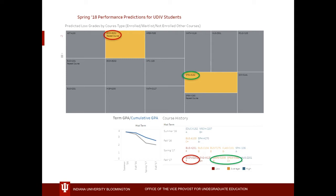If I had this information as an advisor, I would most likely be sending resources. For that economics class, I might say we have really good tutoring, or suggest the smaller version of the class. For another at-risk course, I might say: join a club for that major, or this might be a good time to see an instructor. That's how we would use the information we've been given. And with that, I'm moving on to Stefano.